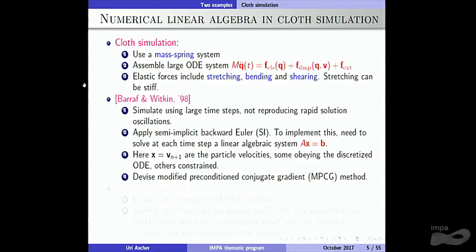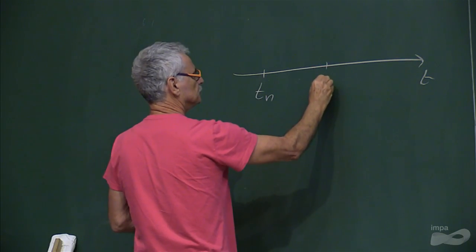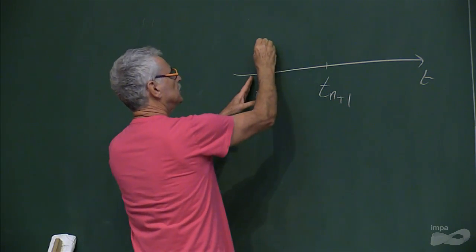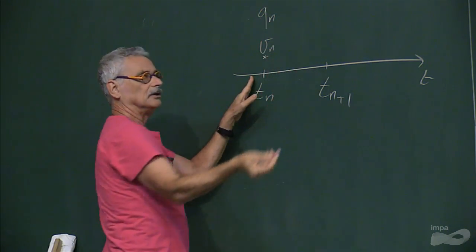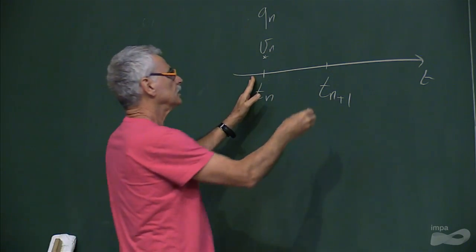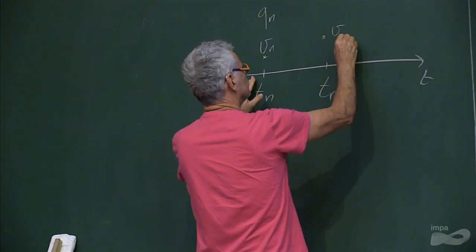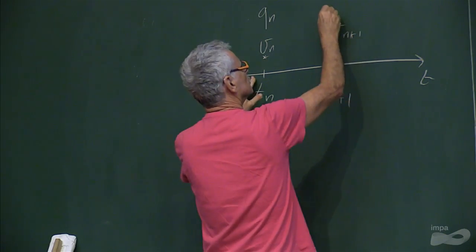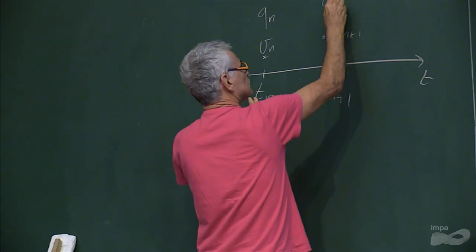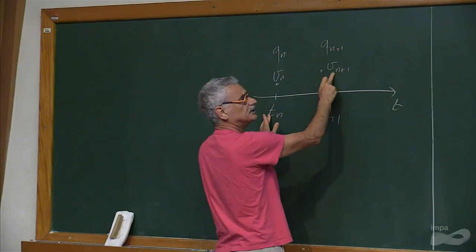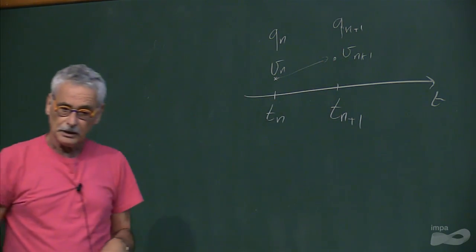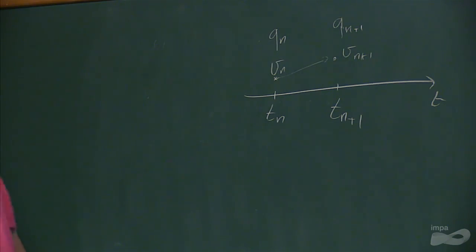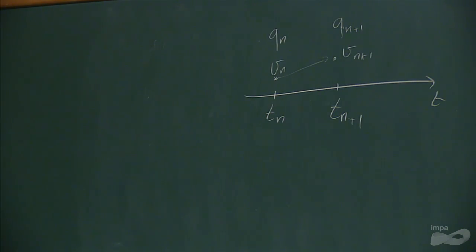At TN we know the positions and velocities of the particles, and we want to find VN+1, from which we also get QN+1, since V is just the derivative of Q. This semi-implicit method requires solving a system of linear equations AX = B at each time step, where X is the velocity at N+1. Baraff and Witkin proposed a preconditioned conjugate gradient, but modified.